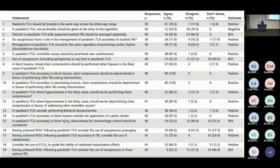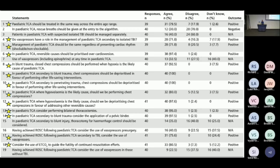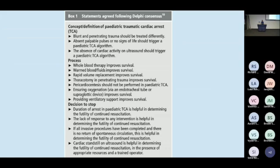Out of their 19 initial statements, through three rounds of revision, they managed to get 13 across to consensus, which they then included. It's all fairly familiar stuff from adult practice. They agreed to treat TCA in kids with a standard approach regardless of age or initial rhythm, to prioritise addressing reversible factors over cardioversion and chest compression, and felt there was still a role for chest compression where hypovolaemia or hypoxia were felt to be a large driver. They would perform bilateral thoracotomies, bind pelvises, splint limbs, control external haemorrhage, and perform volume resuscitation with warm blood products, with consideration of thoracotomy in penetrating TCA.